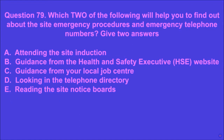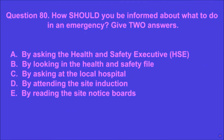Question 79: Which two of the following will help you to find out about the site emergency procedures and emergency telephone numbers? Give two answers. A: attending the site induction, B: guidance from the HSE website, C: guidance from your local job center, D: looking in the telephone directory, E: reading the site notice boards. A and E are the correct answers.